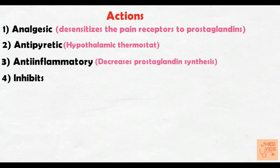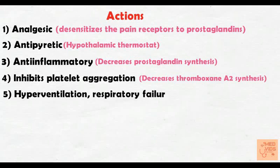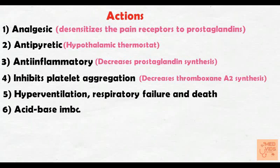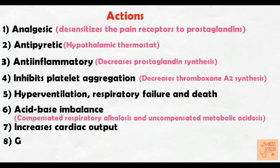Aspirin also inhibits platelet aggregation, an effect well observed at lower doses. It does that by decreasing thromboxane A2 synthesis, which is also a product of the cyclooxygenase enzyme. Aspirin causes hyperventilation in higher doses, leading to acidotic breathing, and in very toxic doses it causes respiratory failure and even death. Aspirin is more often associated with acid-base imbalance disorders such as compensated respiratory alkalosis in higher doses and uncompensated metabolic acidosis in very toxic doses due to renal failure.